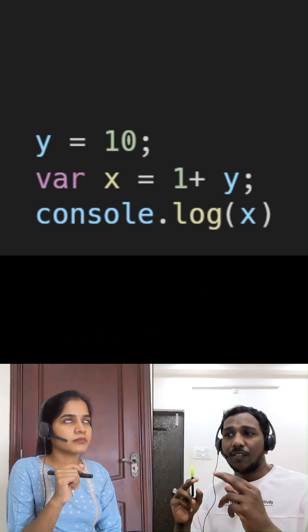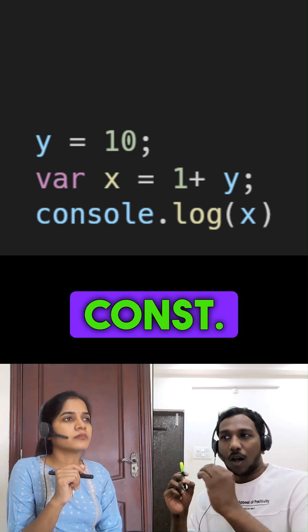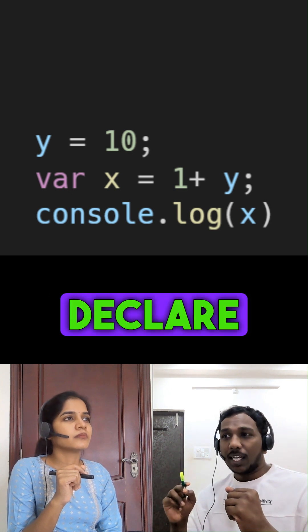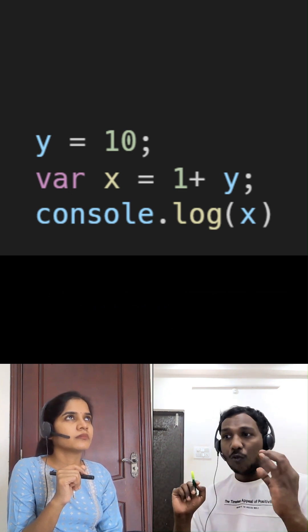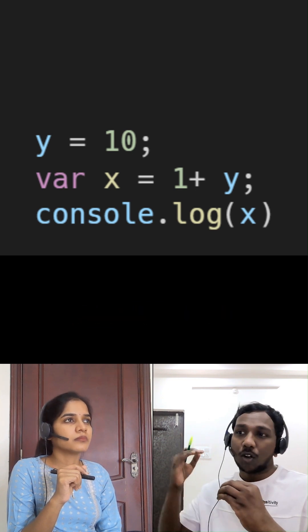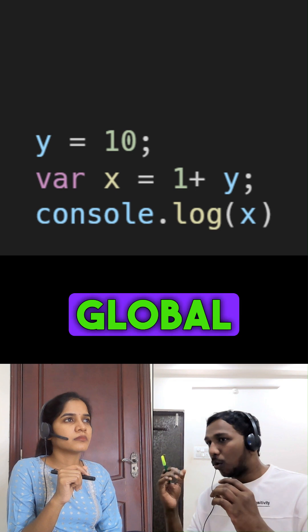In the first line, we are trying to declare the variable y without using var, let or const. This point is very important. Whenever we are trying to declare the variable without using var, let or const, JavaScript engine will automatically add this to the global object as a property. And it will treat it as a global variable.